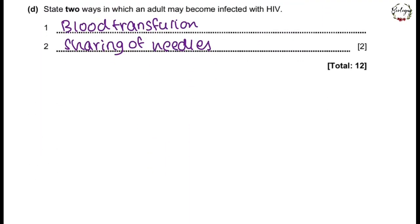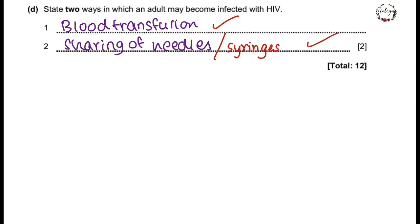Two ways in which an adult can become infected with HIV: you can write unprotected sexual intercourse, or blood transfusion, or sharing of needles or syringes. These points appear across most mark schemes when discussing how a sexually transmitted disease can be transferred from one host to another, so make general points like blood transfusion and sharing of needles or syringes.